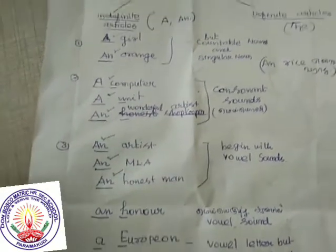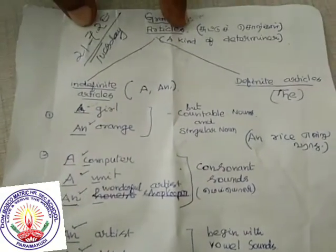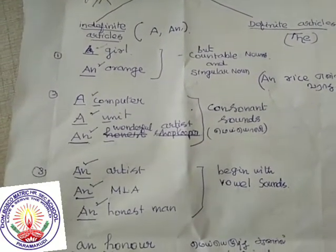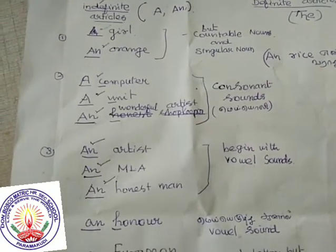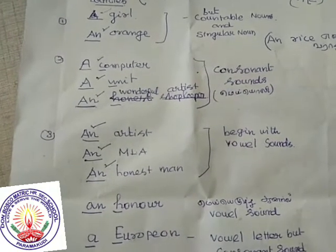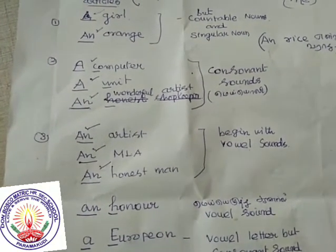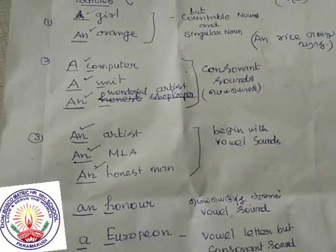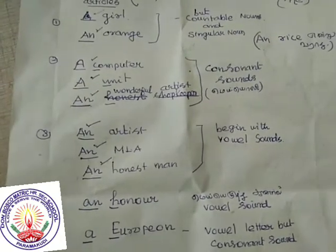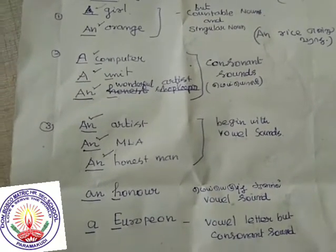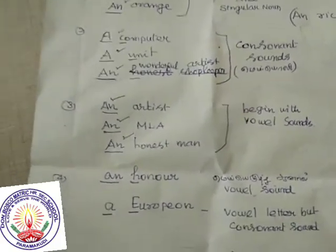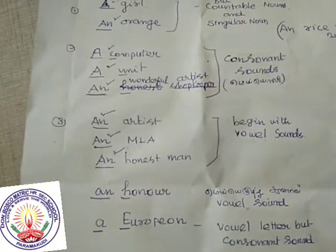They are countable nouns. Before countable nouns, you can use 'a' and 'an'. But before singular nouns, you must use 'a' and 'an' — this is very important. You know countable nouns from your earlier classes. Before plural countable nouns, you cannot use 'a' or 'an' — any articles. You must mind it.